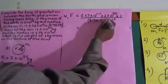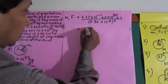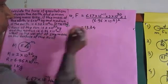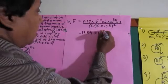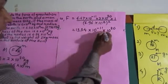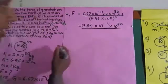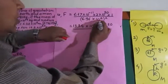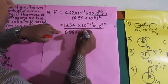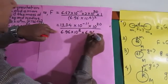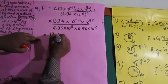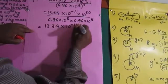Now we are going to multiply. 6.67 × 2 = 13.34. There is a point after two digits, so 13.34 multiplied by 10⁻¹¹ multiplied by 10³⁰. We multiply the numbers and the powers of 10 are taken separately. So the numerator becomes 13.34 × 10⁻¹¹⁺³⁰.